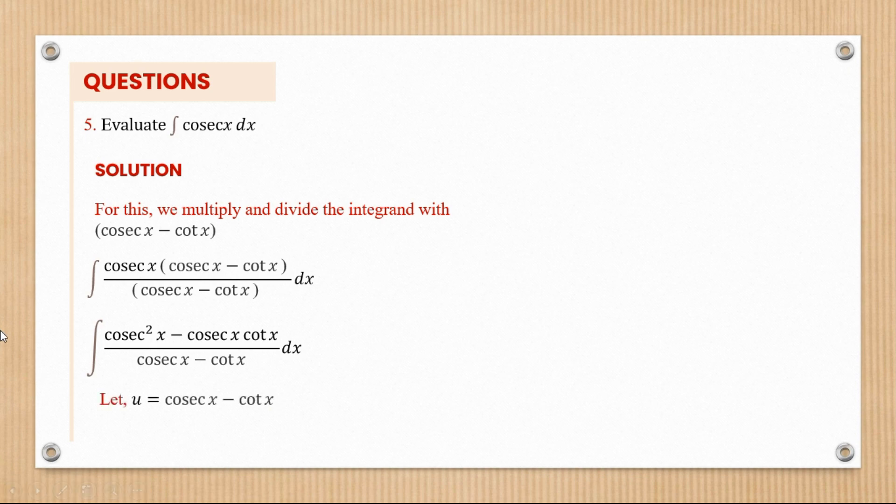I will now let u be equal to cosec x minus cot x. So du/dx should be equal to - the derivative of cosec x is negative cosec x cot x, and the derivative of cot x should be negative cosec squared x.